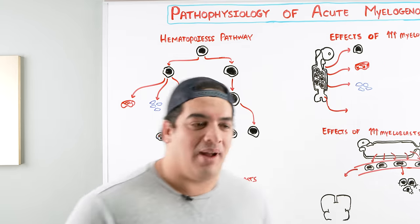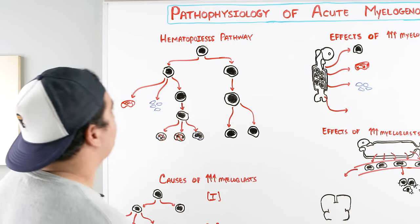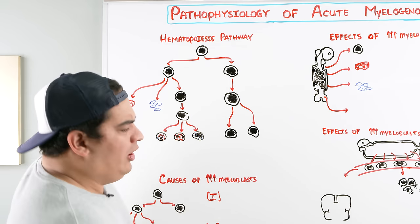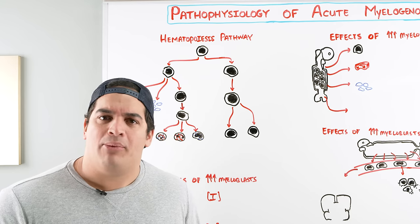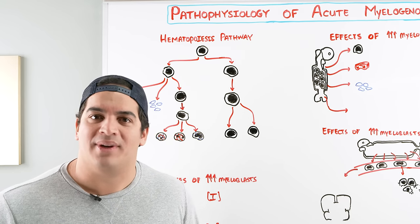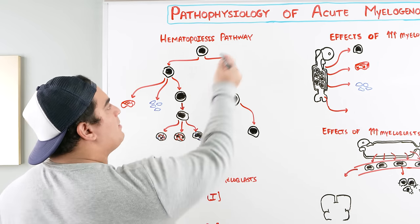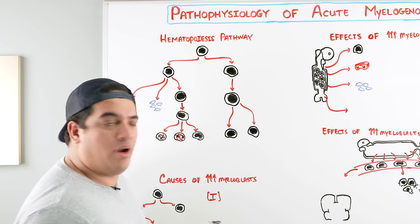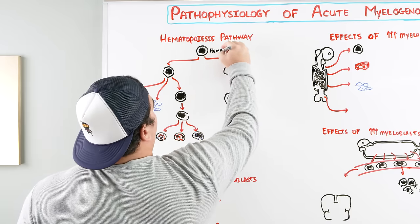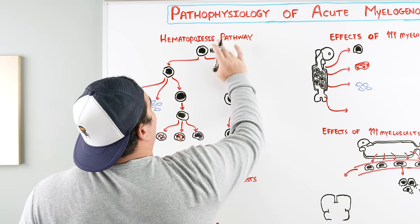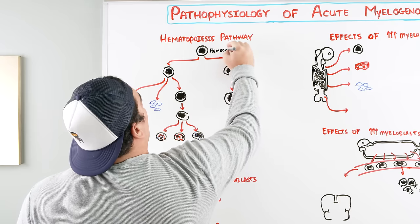Let's talk about acute myelogenous leukemia — I commonly say AML. This disease is really a problem with the hematopoiesis pathway — the production of all blood cells. It all starts with this cell right here, which takes place in what is called the red bone marrow. It starts with this big head honcho called the hemocytoblast, which is like the stem cell for all blood cells.